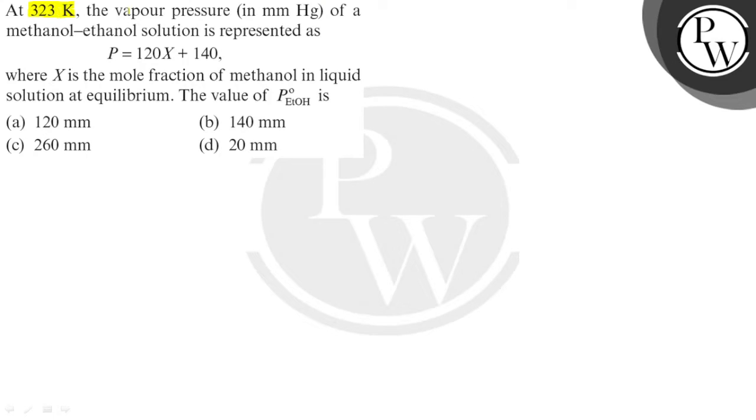At 323 Kelvin, the vapor pressure in mm of Hg of a methanol-ethanol solution is represented as - this is the vapor pressure of this binary solution - where x is the mole fraction of methanol in liquid solution at equilibrium. The value of P0-ethanol is: